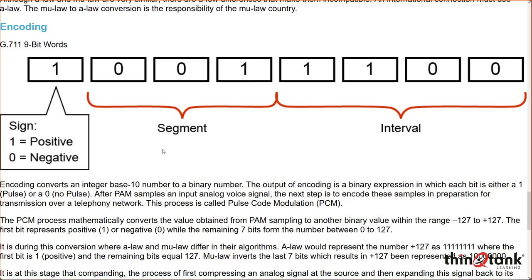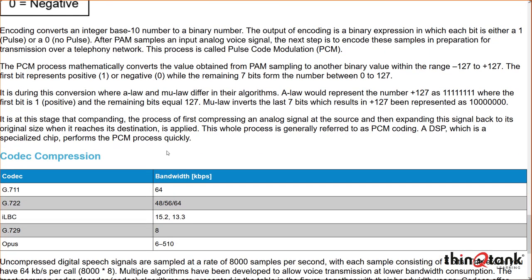Looking at some different codecs — G711 is our basic codec, meaning non-complex with no compression, generating a 64 kilobit per second stream — about 80 kilobits per second with overhead — at 50 packets per second with about 160 bytes of payload. Cisco samples at 20 milliseconds per packet, so we're only encapsulating 20 milliseconds of information at a time. With 8 bits per sample, 8,000 samples per second, and 20 milliseconds, it ends up being about 160 bytes.